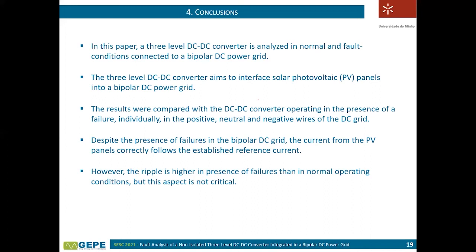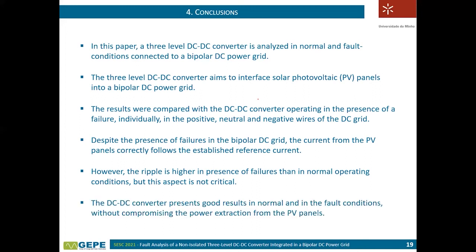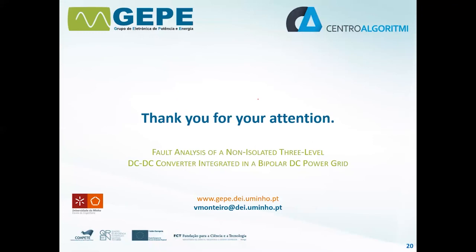It is important to highlight that a traditional boost converter with a two-wire DC grid would fail to extract maximum power if one of the wires fails. This converter has a set of very important advantages, and even more so considering it can operate during faults in the DC grid. The converter presents very good results in normal and fault conditions without compromising power extraction from the PV panels, which are the most important points to highlight. Thank you very much for your attention — if you have any questions or curiosity, please feel free to contact us.